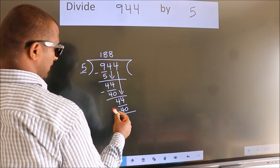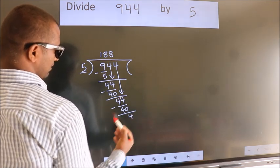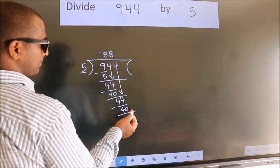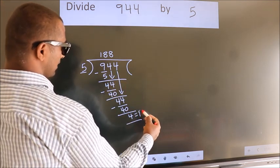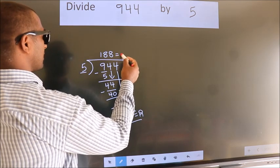Now we subtract. We get 4. No more numbers to bring down. So we stop here. This is our remainder. This is our quotient.